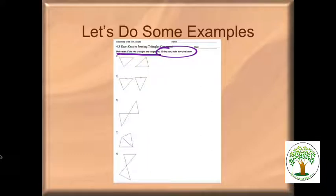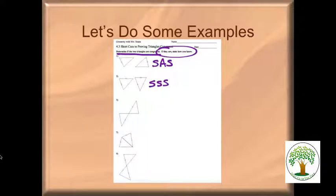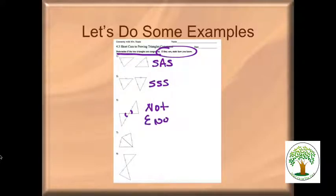For number five, I have vertical angles here, and you are allowed to say those angles are congruent because vertical angles are congruent. But all I have is a side and an angle — there's no side-angle theorem or postulate — so you're going to put something like 'not enough info.' Number seven: they're sharing that side, and that side is congruent to itself, so it is side, side, side.